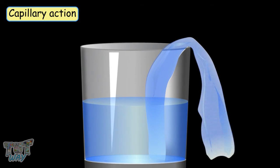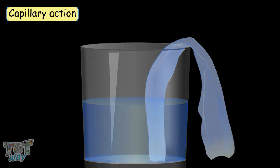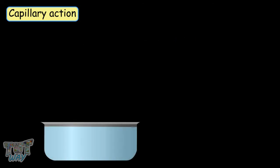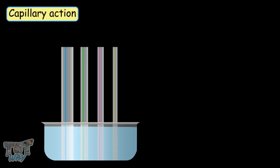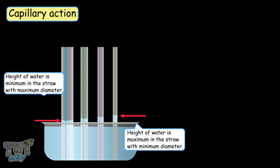Now let's conduct another small experiment. Take a container of water and dip four different straws of different diameters. Now examine the height of water in the straws. The height will be the maximum in the straw whose diameter is minimum and the height of water will be the least in the straw with the maximum diameter. Why does this happen?